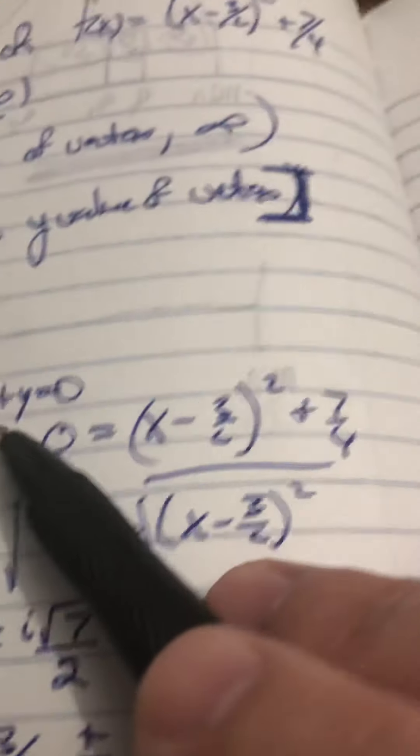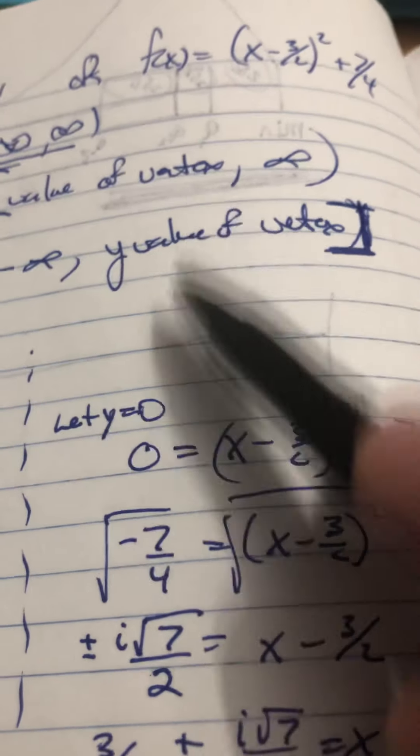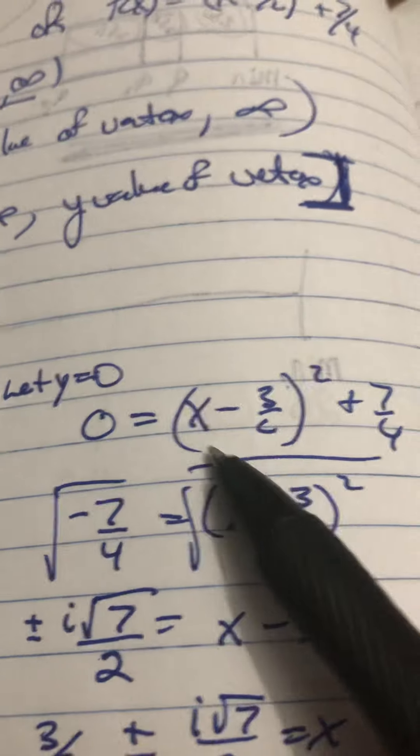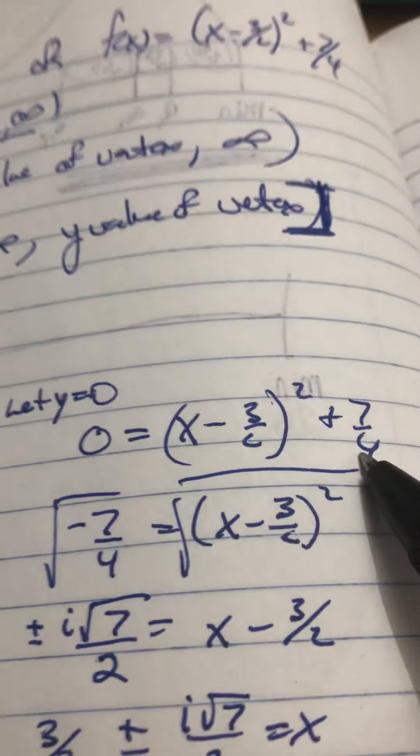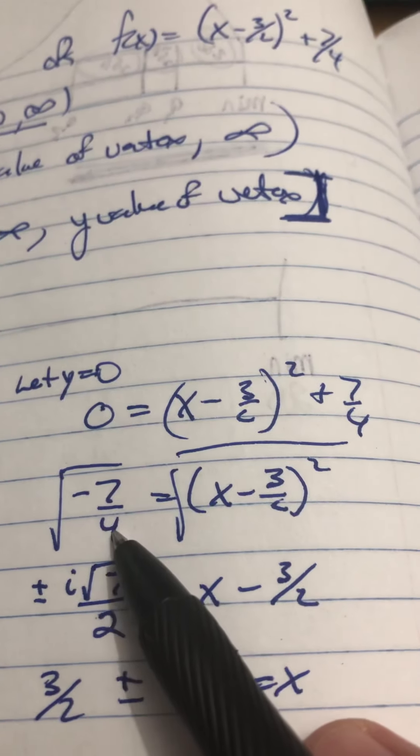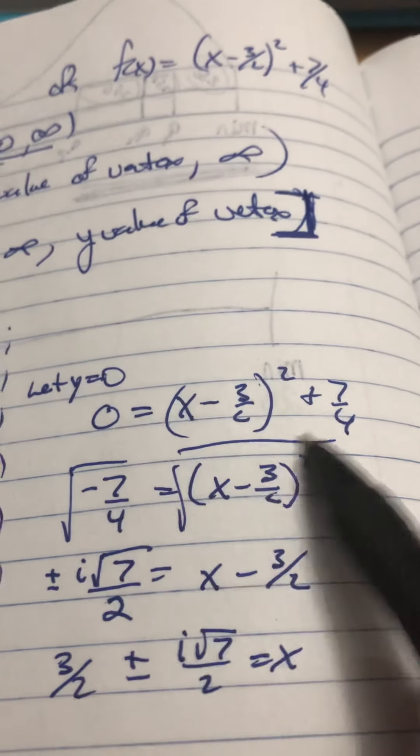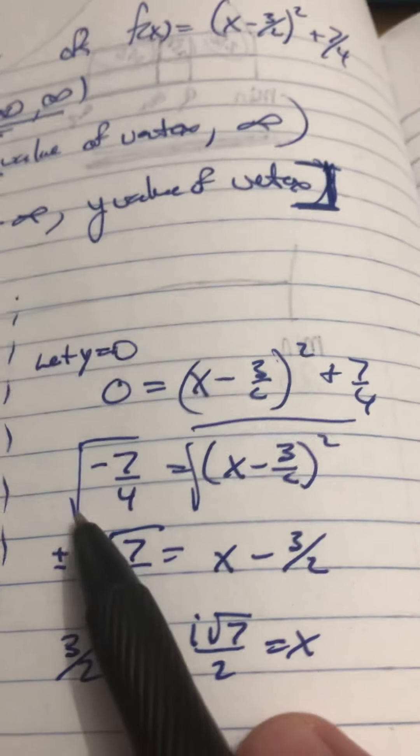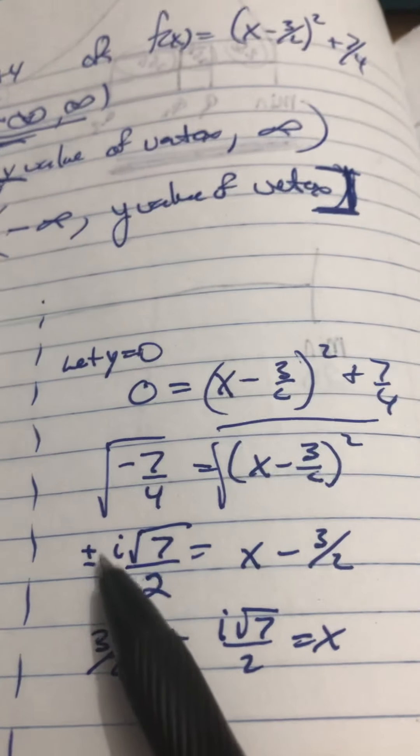Now, if you're in the vertex form, you let your y be 0. And remember, y is the same as your f of x. So, we just put 0 is equal to x minus 3 over 2 squared plus 7 fourths. We bring this over. It becomes a negative 7 fourths. We impose the square root on both sides. If I impose the square root, plus or minus occurs.